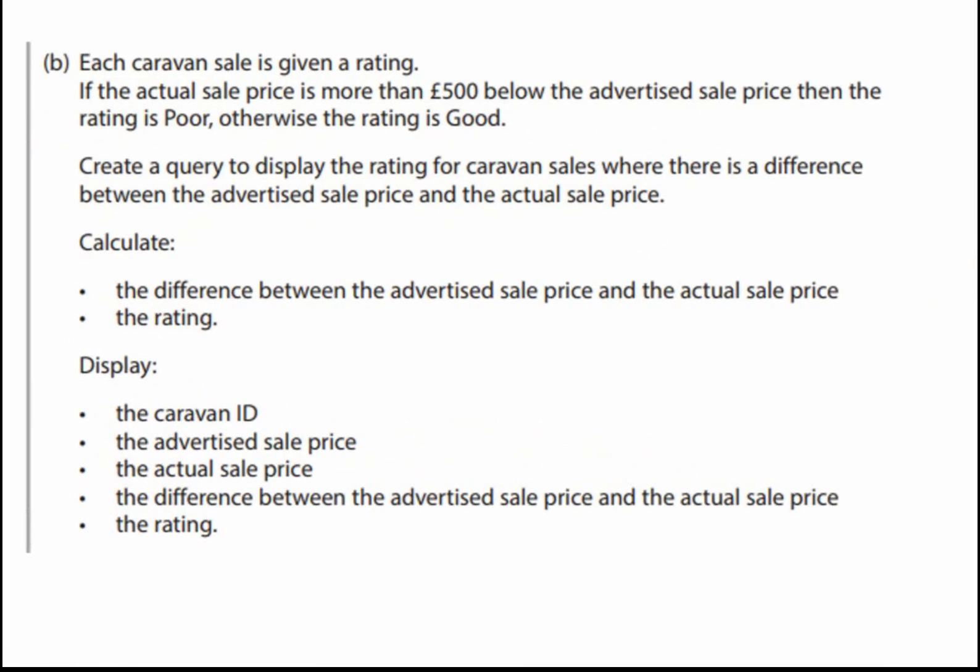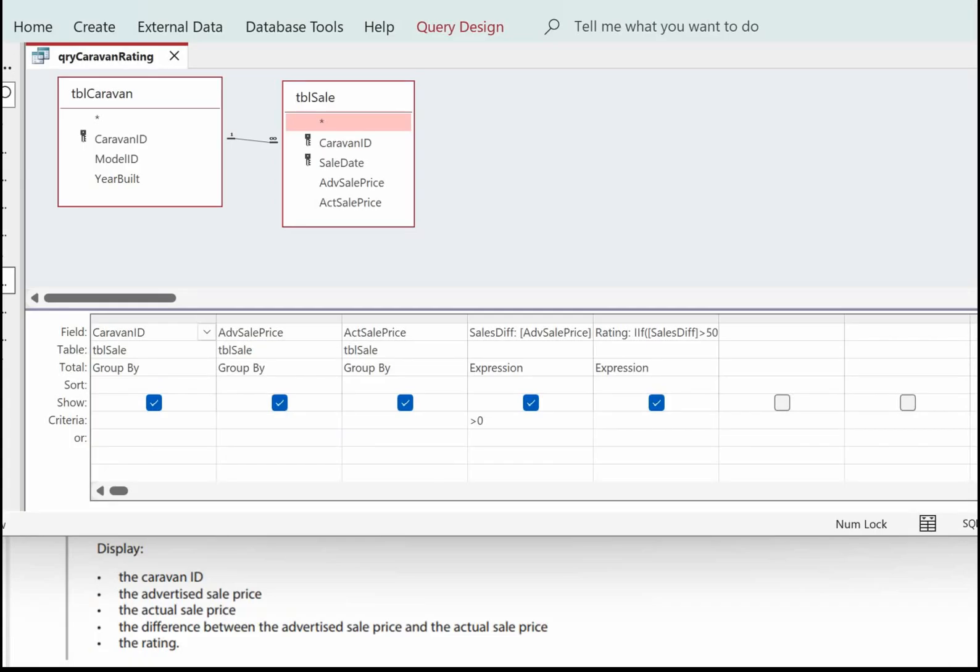Each caravan sale is given a rating. If the actual sale price is more than £500 below the advertised sale price, then the rating is poor; otherwise the rating is good. Create a query to display the rating for caravan sales where there is a difference between the advertised sale price and the actual sales price. Calculate the difference between them and the rating. We need to display the caravan ID, the advertised sale price, the actual sale price, the difference between the two prices, and the rating.